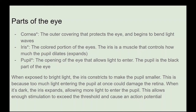When talking about vision, we want to talk about parts of the eye. The cornea is the outer covering that protects the eye and begins to bend light waves. The iris is the colored portion of the eye and is a muscle that controls how much the pupil dilates. The pupil is the opening — the black part — that allows light to enter. When exposed to bright light, the iris constricts to make the pupil smaller, because too much light entering at once could damage the retina. When it's dark, the iris expands, allowing more light to enter.